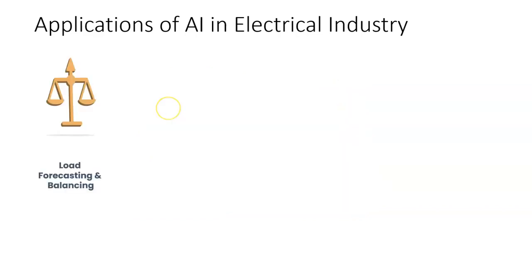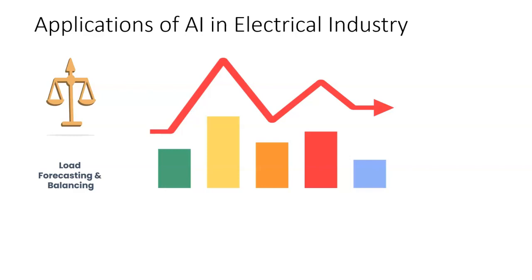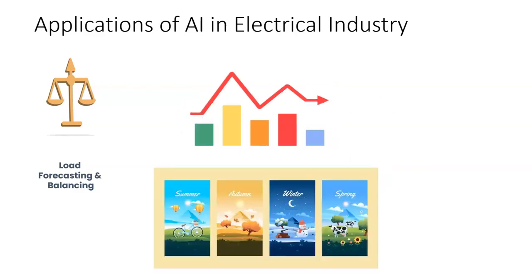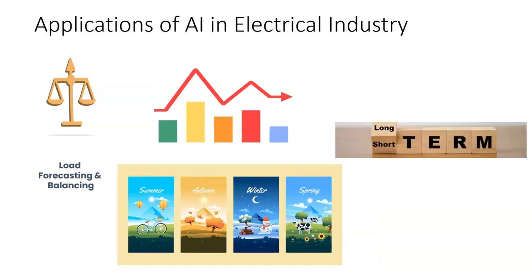That's what we are going to see. Let's start with load balancing and forecasting. This is similar to demand planning that exists in other industries. The key factor is analyzing the peaks and troughs, and in the electrical industry, the peaks and troughs correspond to the different seasons. There will always be times when the load on electricity is higher and times when the load is lower.